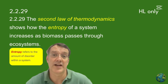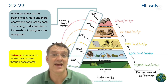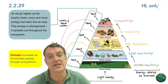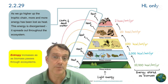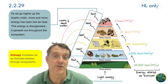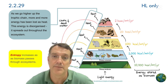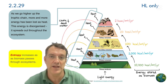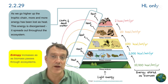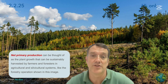The second law of thermodynamics shows us how entropy, or disorder, increases as biomass passes through ecosystems. This principle helps explain why some resource use patterns are inherently unsustainable.